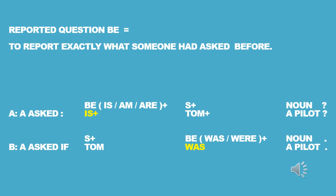Then we change the verb-subject positions. We move Tom from subject to the verb 'be' position, and 'be' is moved to the Tom position. For interrogative sentences, the verb 'be' comes before the subject. For reported speech, the subject comes before the verb: 'Tom was.' The noun 'pilot' stays the same. Also, the question mark is removed — there is no more interrogative mark. So: 'Is Tom a pilot?' becomes 'A asks if Tom was a pilot.'